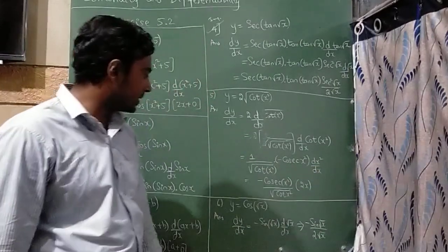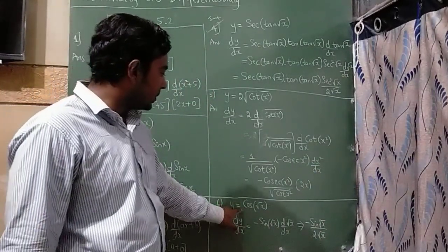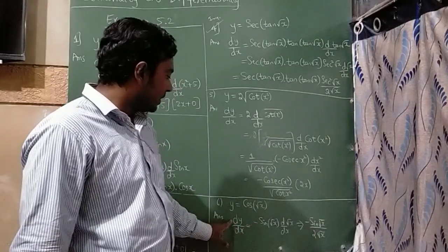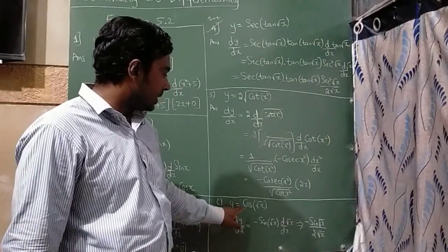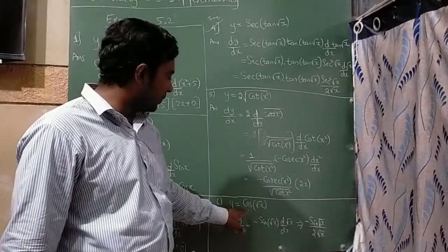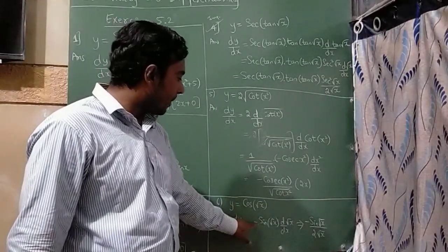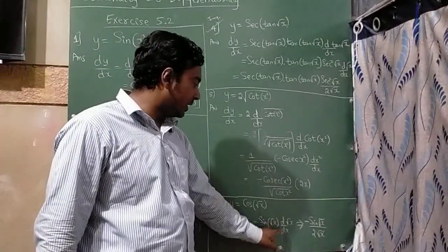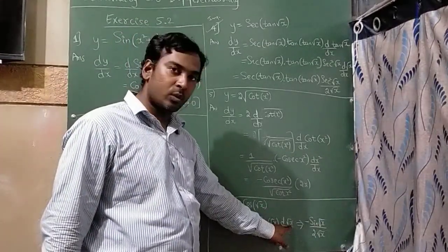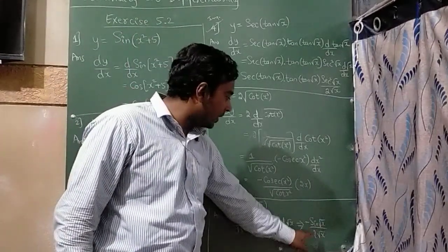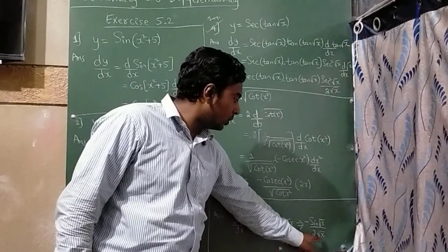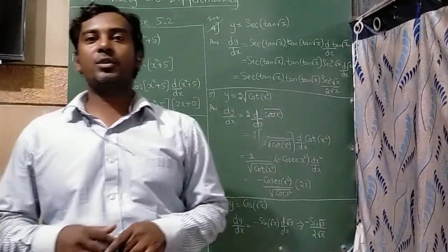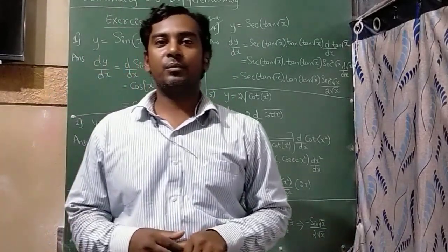The last question is y is equal to cos(√x). So dy/dx: d/dx of cos is minus sin(√x), and by chain rule d/dx of √x is 1 divided by 2√x. So I hope you all understood. Thank you.